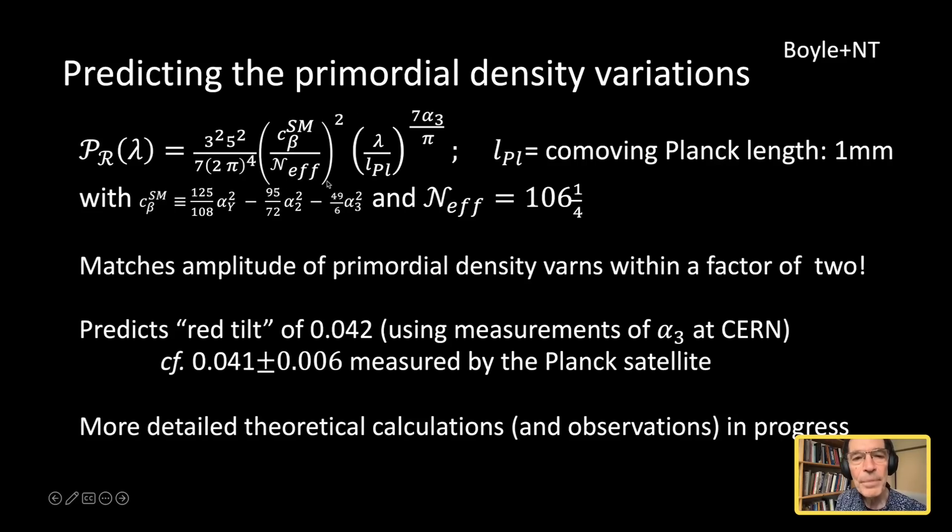This is the red tilt. You see, this power of the fluctuations as a function of wavelength is growing with wavelength, like lambda to this small power. And this small power turns out to be 0.04, which is what we observe in the cosmic microwave sky. So there is this rather magical formula that comes out of those assumptions. It turns out, and this may be a coincidence, but it's a very tempting one, that this formula matches both the amplitude and the red tilt. So this number gives you roughly 10 to the minus 5. Within a factor of 2, it matches the observations. The red tilt it predicts is 0.042, using the CERN measurements of the strong coupling constant, and the observed number from the Planck satellite is 0.041. So this is very tantalizing.